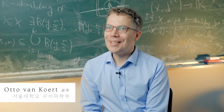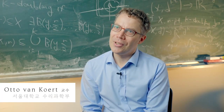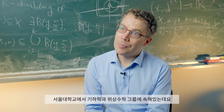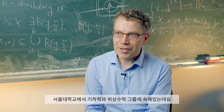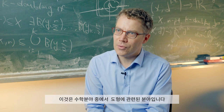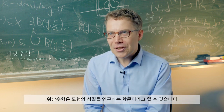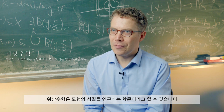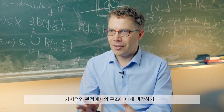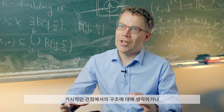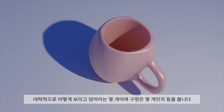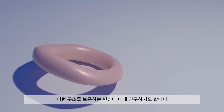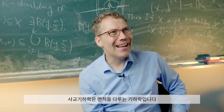I'm in the Geometry and Topology Group. These are parts of mathematics which are concerned with shape. Topology is concerned with qualitative properties of shapes — you can imagine rough scale structures: how many components there are, how it roughly looks, how lumpy it is, how many holes there are, things like that. It looks at transformations that preserve this rough structure.